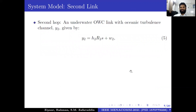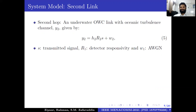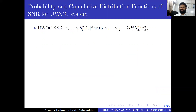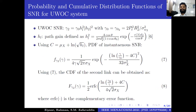The second link, that is the underwater OWC link with oceanic turbulence, is given by H₂·R₂·S + noise. H₂ is the channel impairment for underwater, modeled using log-normal distribution. The PDF is given by Equation 6, which is an exponential function with a logarithmic argument. The PDF and CDF for the second link SNR are derived; the CDF for the second link has a complementary error function with a logarithmic argument.